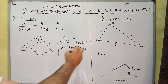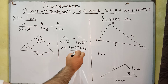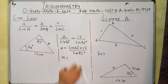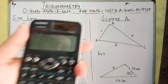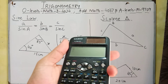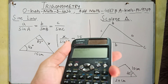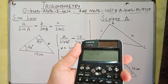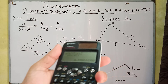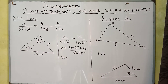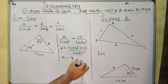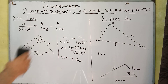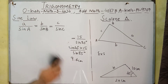We want to calculate x, so sin 40° moves to the other side: x equals sin 40° times 15 divided by sin 85°. Using a calculator, this gives us 9.6, so x equals 9.6 cm. This was the sine law and its application. Up next we have the cosine law.